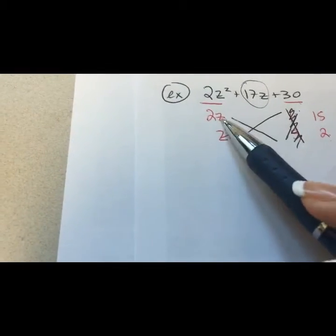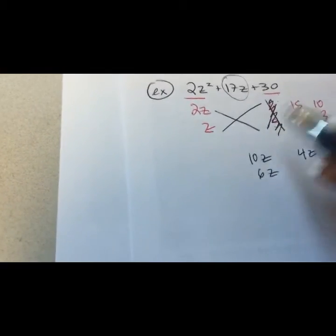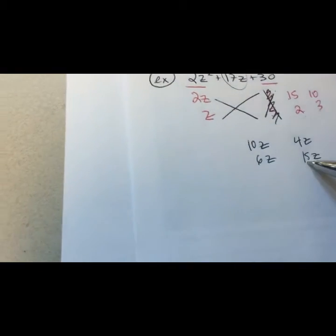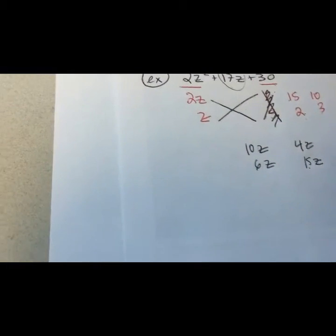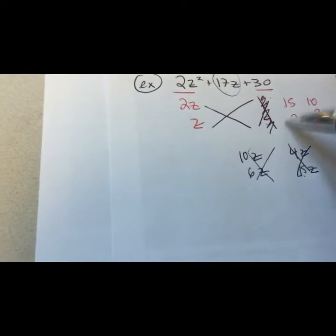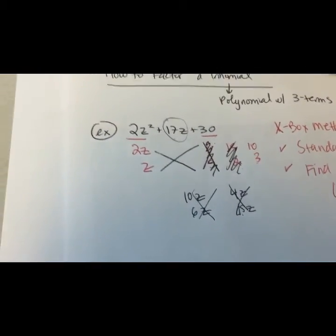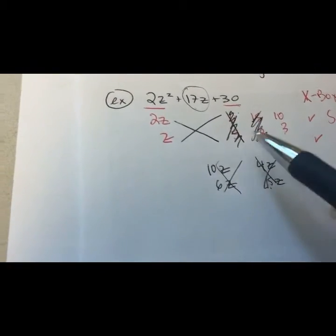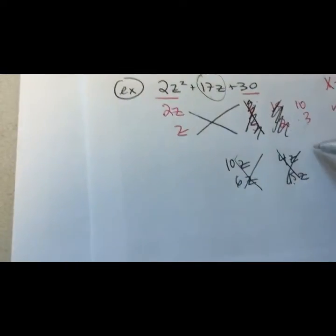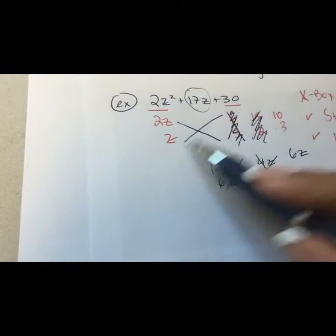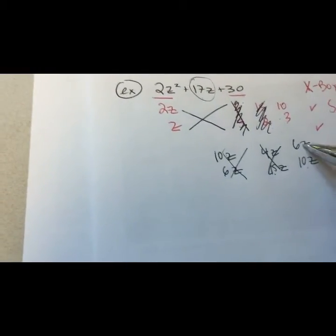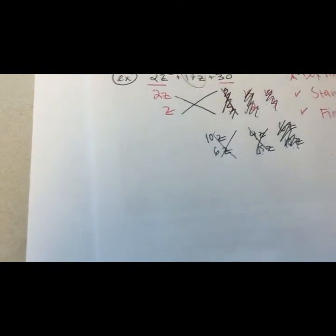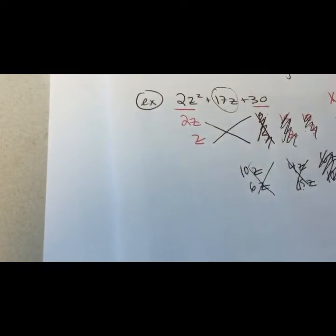The next lottery numbers are 15 and 2: 2z times 2 gives me 4z, and z times 15 gives me 15z. Will 15 and 4 ever give me 17? No, so this doesn't work either. Then I try 10 and 3: 2z times 3 gives me 6z, and z times 10 gives me 10z. 10 and 6 give me 16, not 17, so that doesn't work.